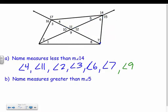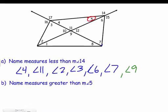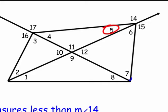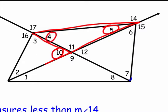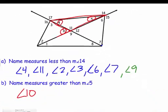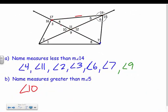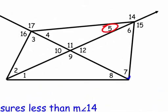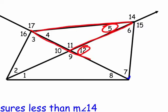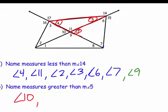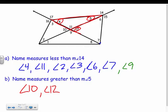Now let's go the other way — find angles greater than angle 5. Angle 10 is an exterior angle to the triangle where angle 5 is a remote interior, so angle 10 is greater than angle 4 and angle 5. Also, angle 12 is exterior to another triangle containing angle 5, so angle 12 is greater than angle 4 and angle 5.